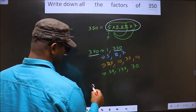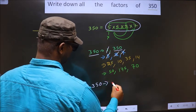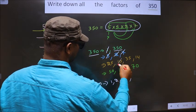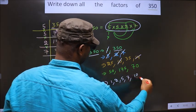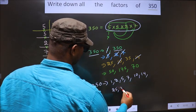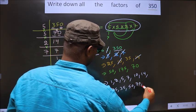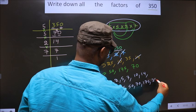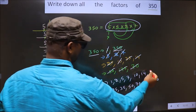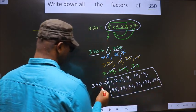That is 1, 2, 5, 7, 10, 14, 25, 35, 50, 70, 175, 350. So these are all the factors of 350. Am I clear?